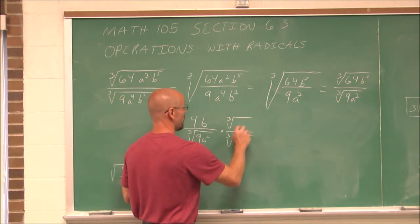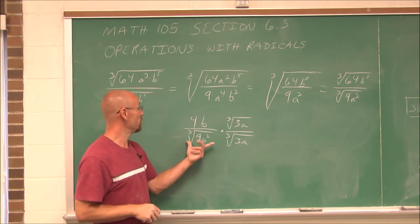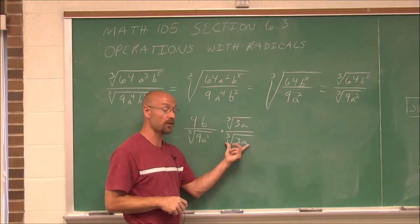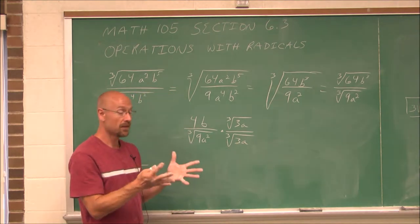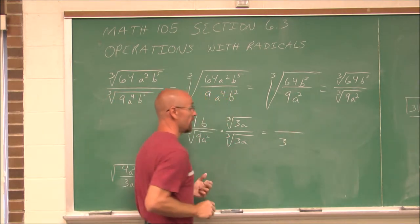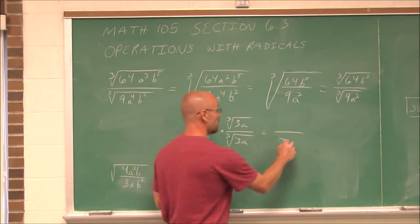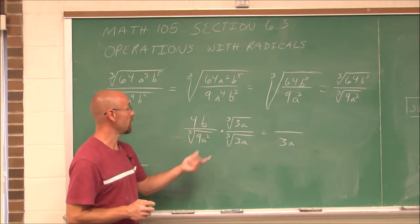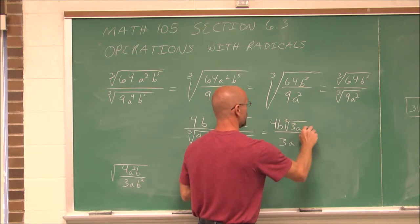What I do to the denominator, I have to do to the numerator. So now combining this: the cubed root of 9a² times the cubed root of 3a gives the cubed root of 27a³. I know I have three factors of 3, and I'm taking the cubed root, so that gives 3. And I have three factors of a, so I'd get a when I take its cubed root, giving 3a in the denominator. On top I just multiply to get 4b times the cubed root of 3a.